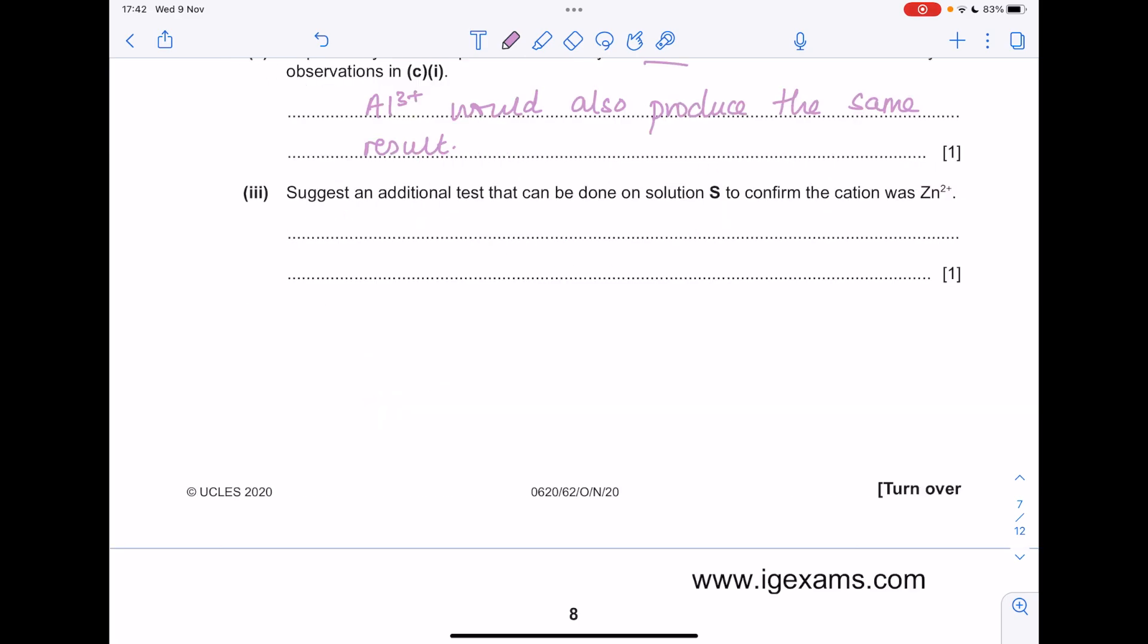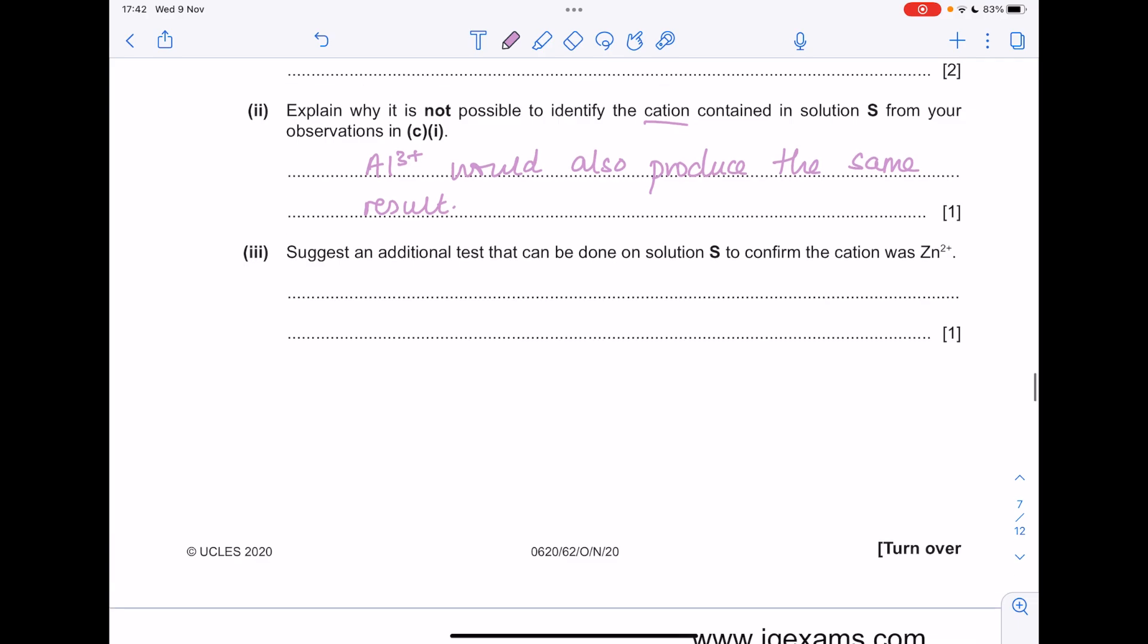Suggest an additional test that can be done on solution S to confirm that the cation was Zn2+. This time you'd want to add excess ammonia as that precipitate should dissolve if you have zinc. You can write it out in words, by the way, if you're not happy with the formulae.